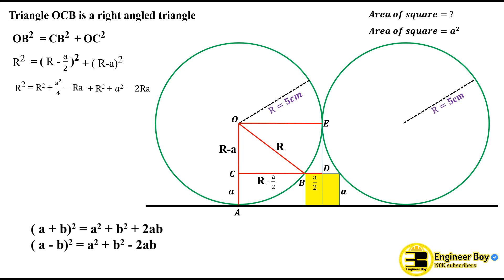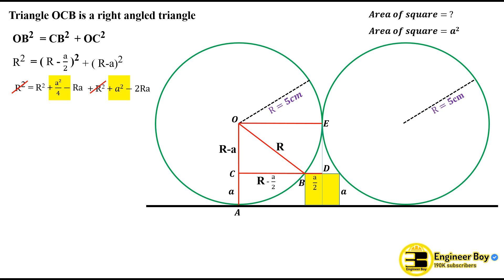This uses the (a − b)² formula. The r² terms cancel, giving us a²/4 + a² which is 5a²/4, then −2ra − ra which is −3ra, plus r², all equal to zero.